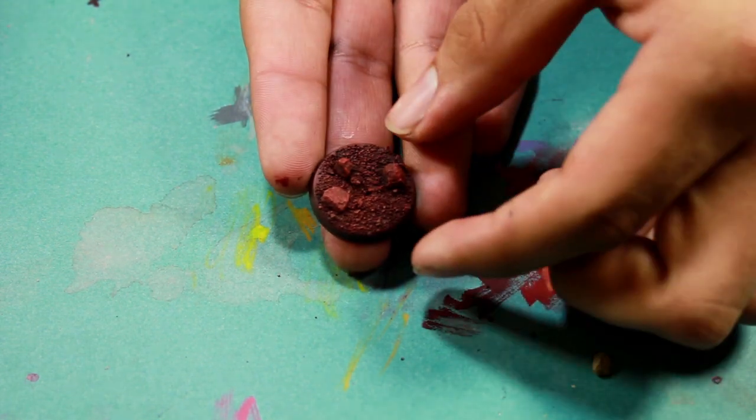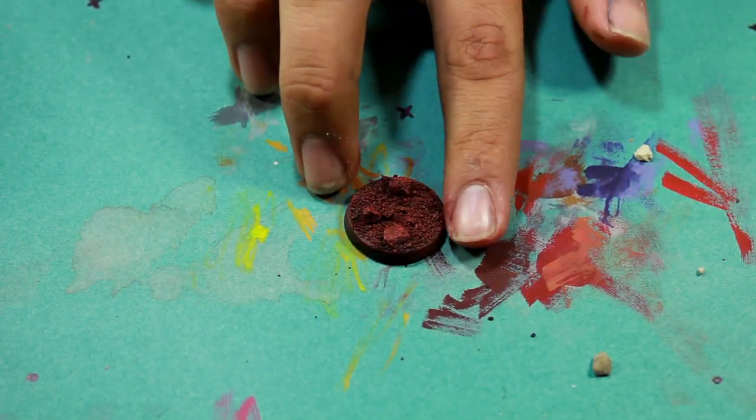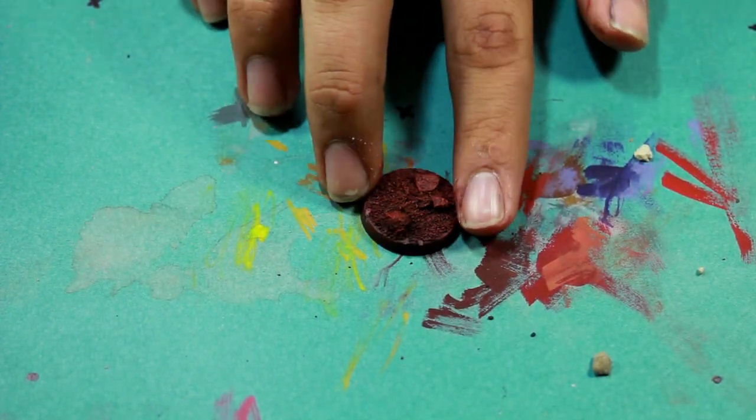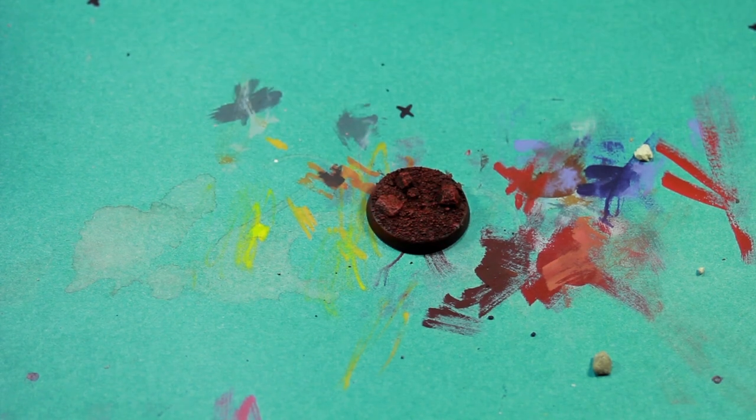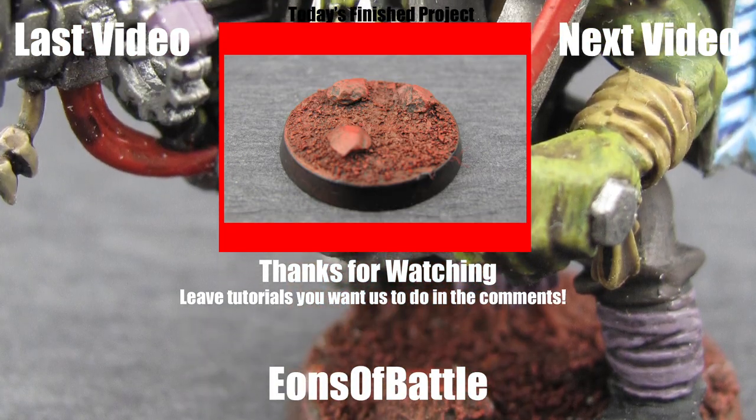And there you have it. A Martian landscape, ready for your miniature. Hope you found this tutorial helpful. See you next time.